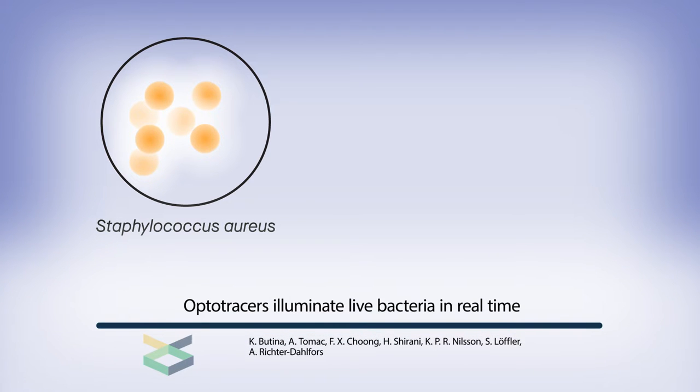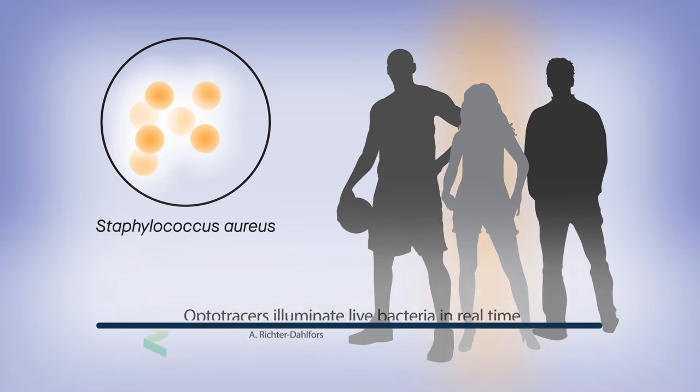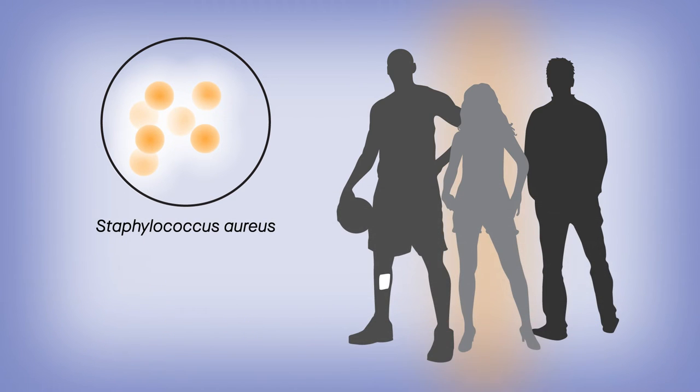Staphylococcus aureus, or Staph, is a human commensal bacterium found in almost one-third of the population. Unfortunately, this bacterium can become a dangerous, opportunistic pathogen.